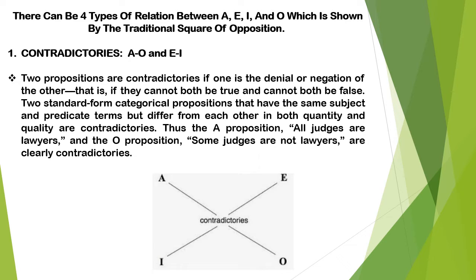You see, the A proposition is affirmative, whereas the O proposition is negative. Also, A proposition is universal and O proposition is particular, so they differ both in quantity and quality. Therefore they are contradictories — if one is true, the other will be automatically false.